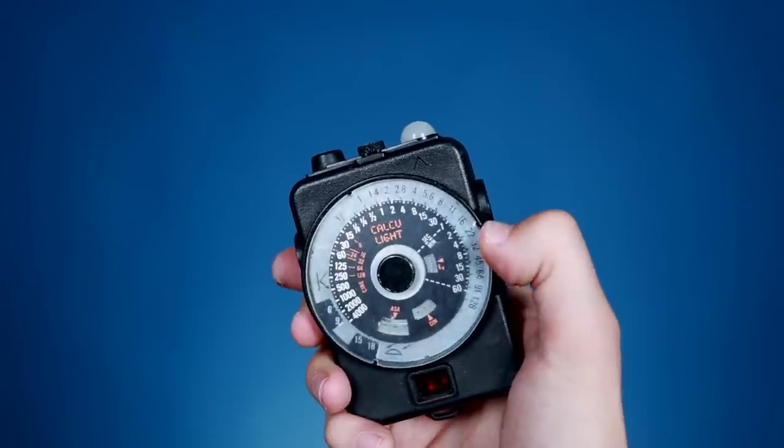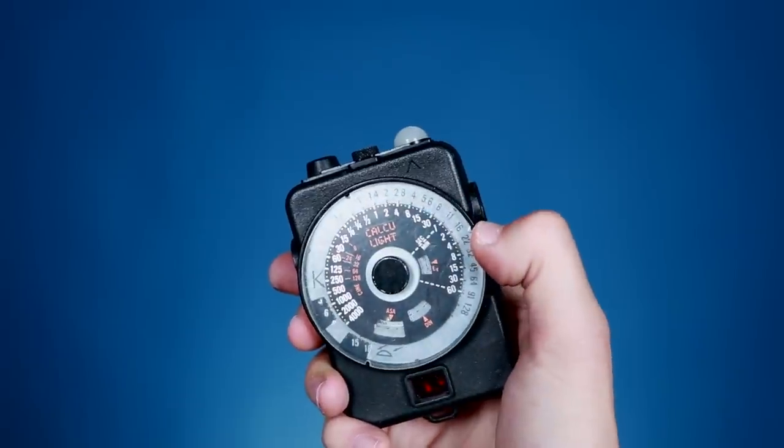Before digital cameras, back on film cameras, you had to use an actual light meter in your hand to read the lighting in the environment you were in, look at the numbers, and set your camera accordingly.